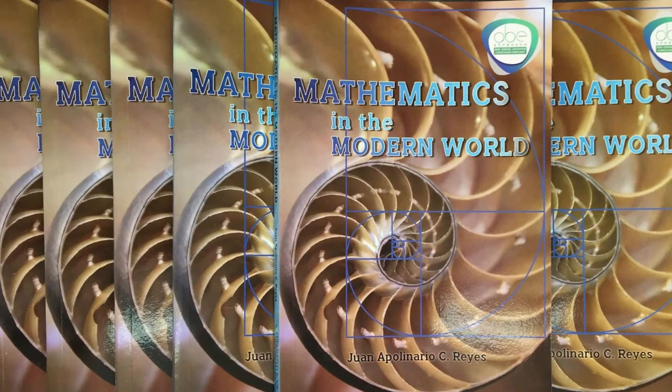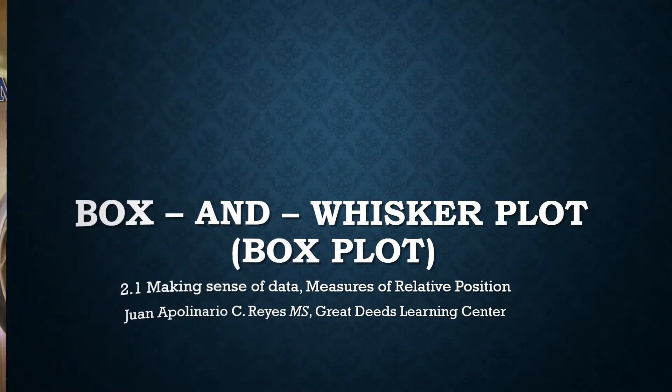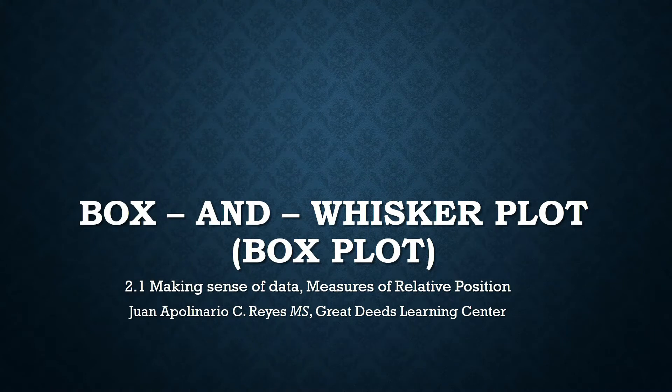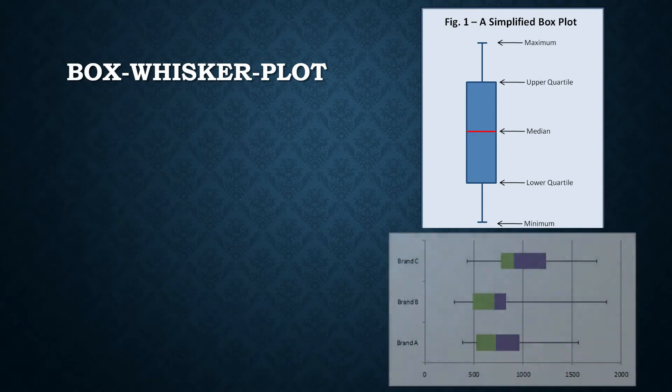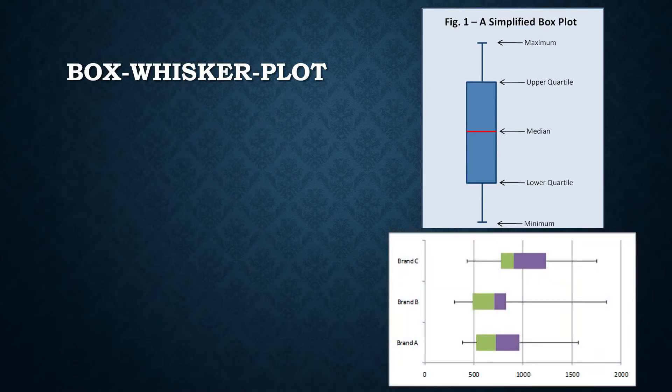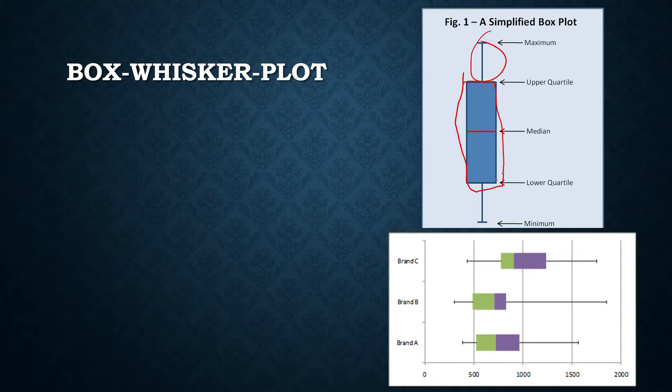In this video, we shall put together two measures of dispersion and include one measure of central tendency, all contained in one statistical tool called the box plot or box-and-whisker plot. Why call it a box-whisker plot? Because it shows a box, a rectangular box, and two whiskers. This is your box, these two are the whiskers.